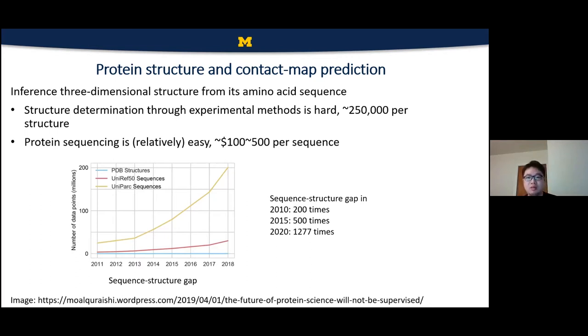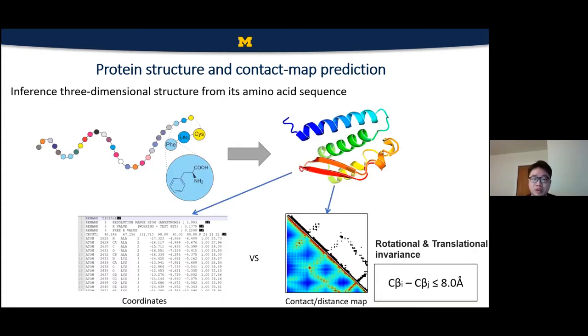So sequence-based protein structure prediction should help to narrow the gap between the sequence and the structures. To summarize, the input of the protein structure prediction is the sequence and the output of the method or the algorithm is a protein structure. And each atom is represented by the coordinates in three dimensional space, just like this in a PDB format.